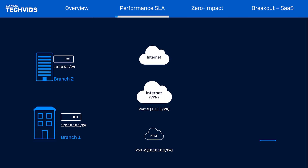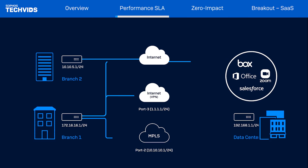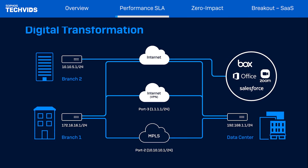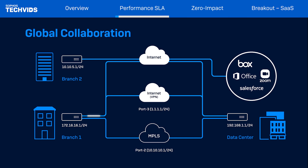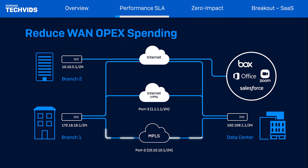Let's start with an example of a generic company. Number one, they're going through a digital transformation and are using SaaS applications like Office 365, Salesforce, etc. Number two, their IT department wants to use voice and video to enable global collaboration using a private voice over IP application. And finally, number three, they're looking to reduce TCO or WAN FX spending without compromising SLA.